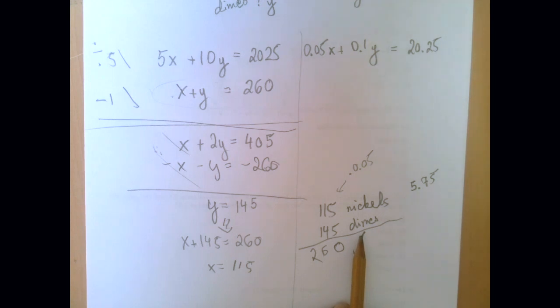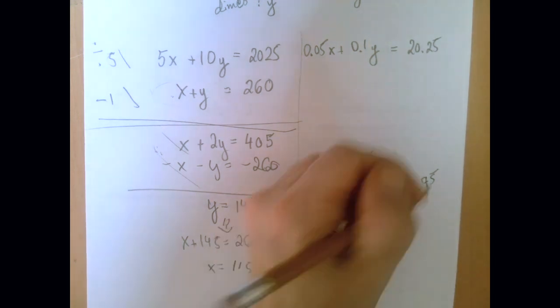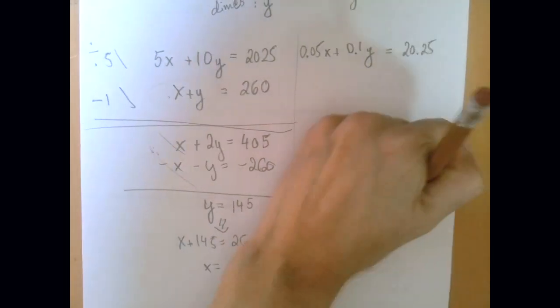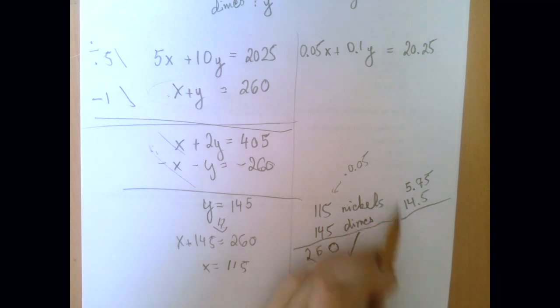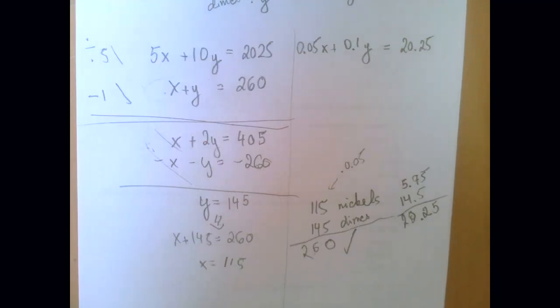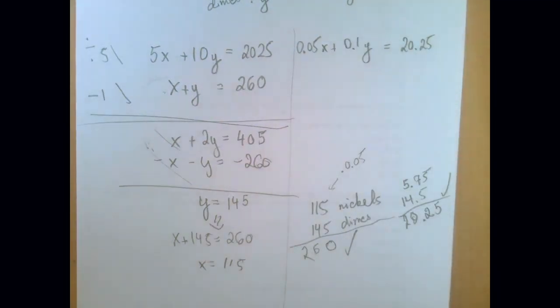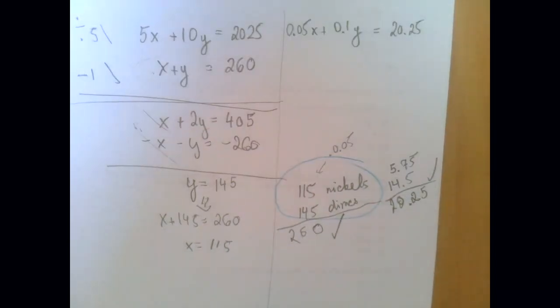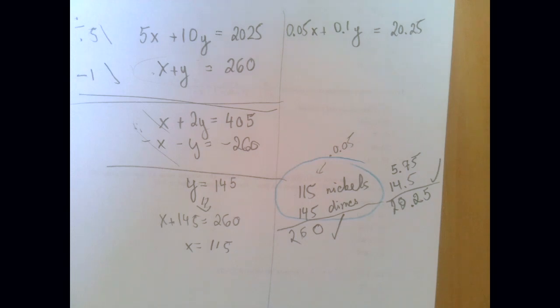And the dimes, well, you just have to divide by 10, which means we have 14.5 dollars worth of dimes. And so when we add these two up, that would be the total value of all coins, and we get the right amount. So our answer is that we have 115 nickels and 145 dimes. Thank you for watching.